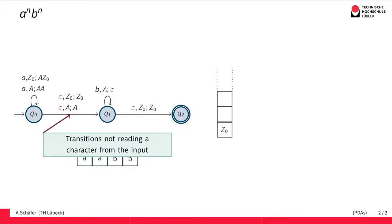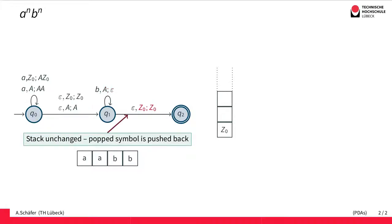There are also epsilon transitions that do not read anything from the input, like this one in the middle, and transitions that do not push anything back to the stack. This transition simply pops the A from the stack. If we want the stack unchanged, we simply pop a symbol and then push it back.